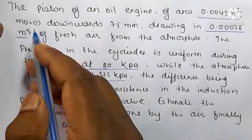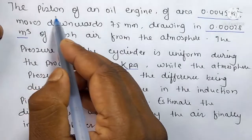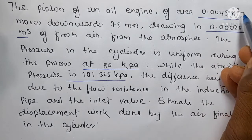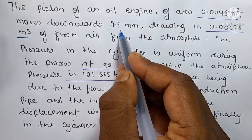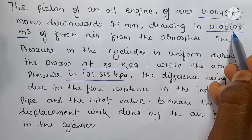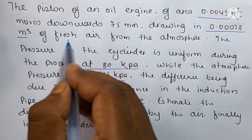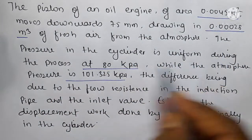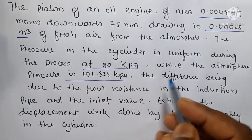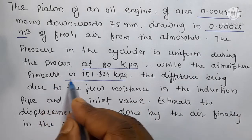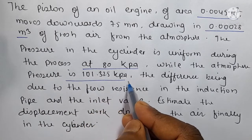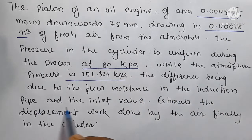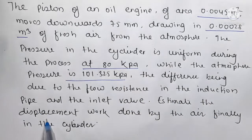Hi friends, I'm going to solve this question. The piston of an oil engine of area 0.0045 meter square moves downwards 75 mm, drawing in 0.00028 meter cube of fresh air from the atmosphere. The pressure in the cylinder is uniform during the process at 80 kilopascal, while the atmospheric pressure is 101.325 kilopascal. The difference is due to flow resistance in the induction pipe and the inlet valve. Estimate the displacement work done by the air.